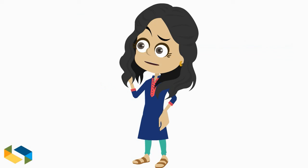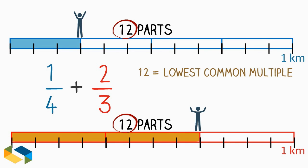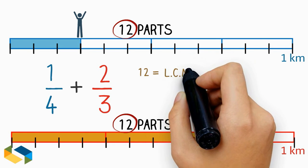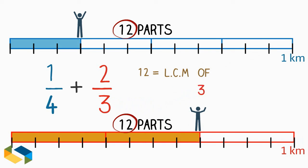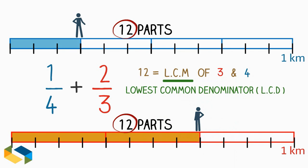But dad, how did you know we need to make twelve parts? Simple. 12 is nothing but the lowest common multiple or LCM of three and four. In fractions, this is also called lowest common denominator or LCD.